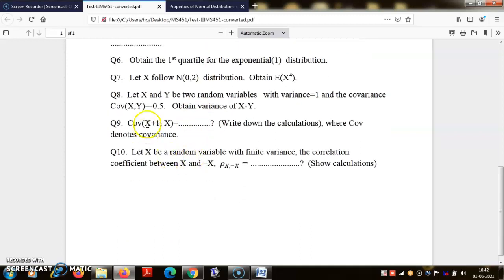X and Y are two random variables. Covariance of X minus Y is variance of X plus variance of Y - so one plus one minus two into covariance, minus 0.5. So this becomes one plus one plus one - three.